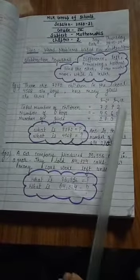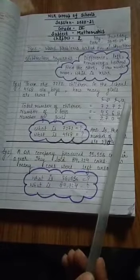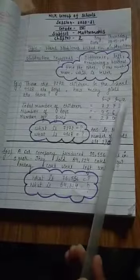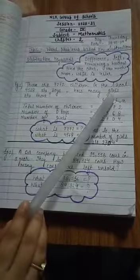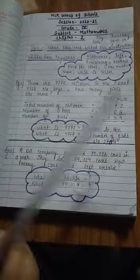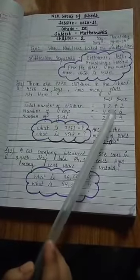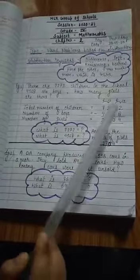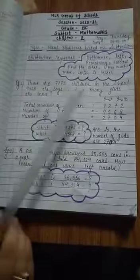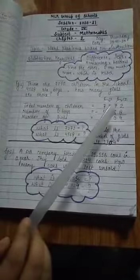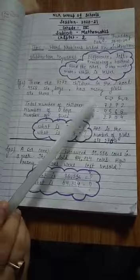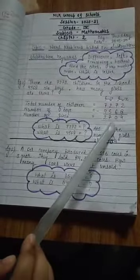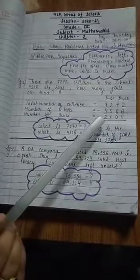So number of girls is equal to, is it possible children to subtract 8 from 2? No. So we will borrow. Then it will become 12 and 7 become 6. So 12 minus 8 is 4, 6 minus 6 is 0. So 12 minus 5 is 7 and 6 minus 4 is 2.